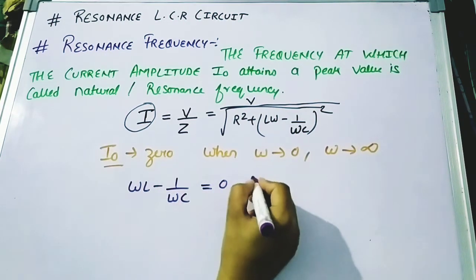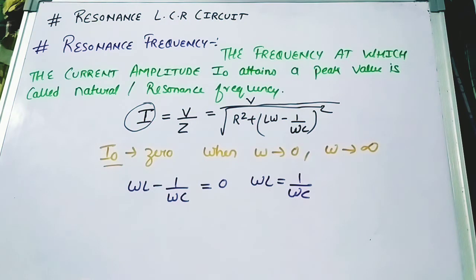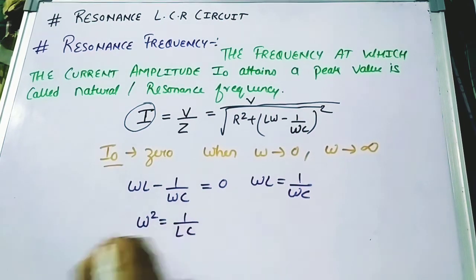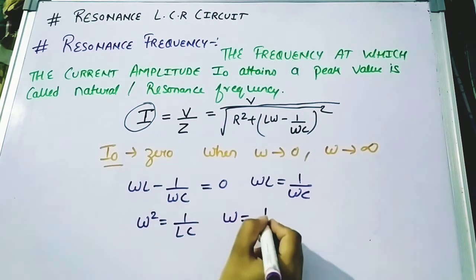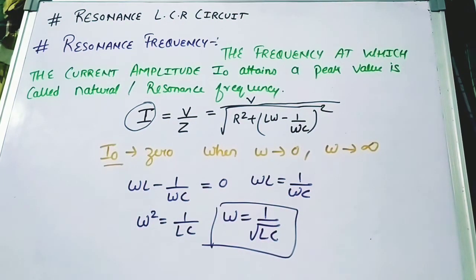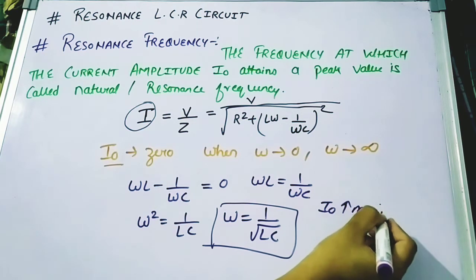That means ωL equals 1/ωC. One important point: this resonance frequency cannot occur in an LR circuit or an LC circuit alone — it only occurs in an LCR circuit. From this condition we get ω² = 1/LC, therefore ω = 1/√LC. This is the resonance frequency, because at this point the amplitude of the current will be maximum — it will be at its peak.